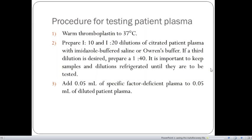Now, coming to the second set that is procedure for testing patient plasma. We have to warm thromboplastin to 37 degree Celsius. After that, similarly to the first step, we have to prepare serial dilutions from 1 is to 10 to 1 is to 20 and so forth. Dilutions of patient plasma with imidazole buffer saline or Owren's buffer is made.